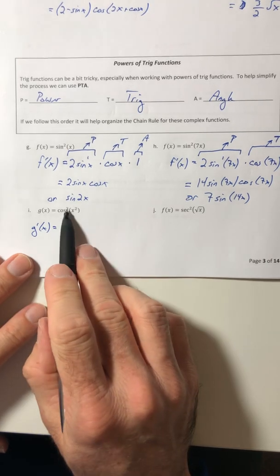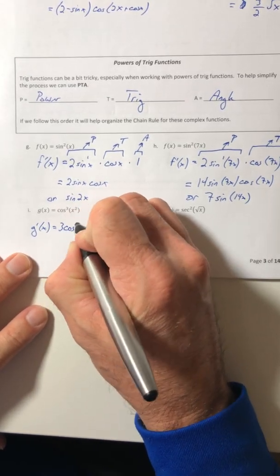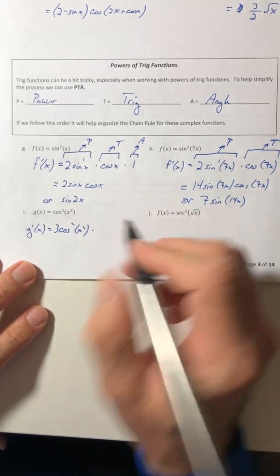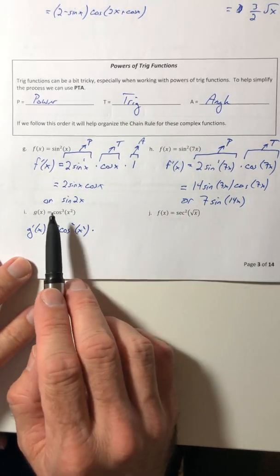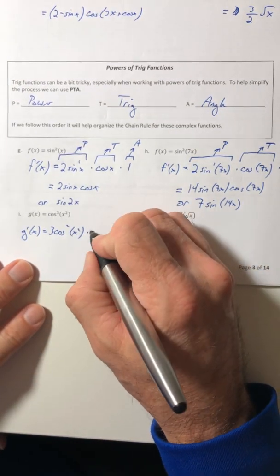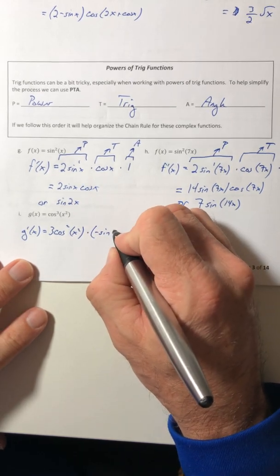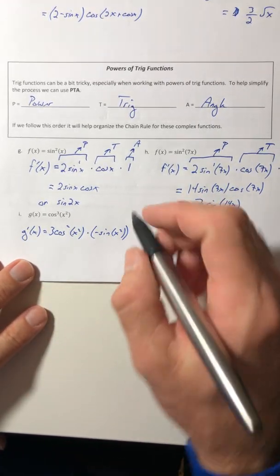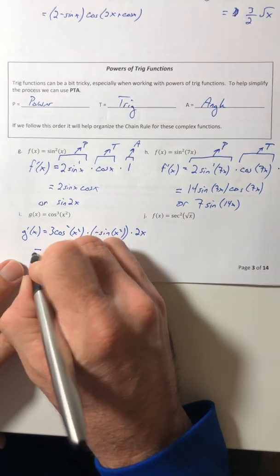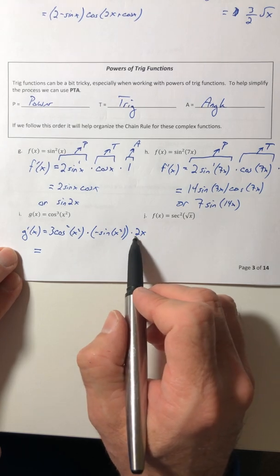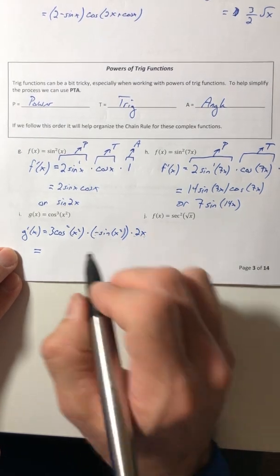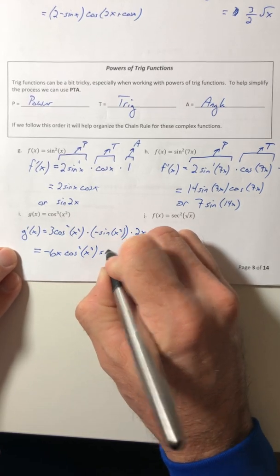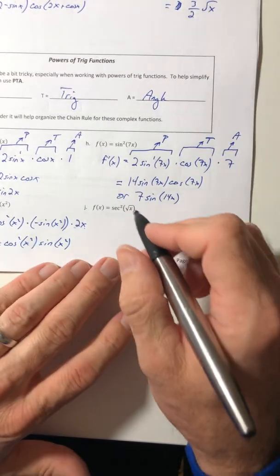The derivative of g: pull the 3 down using the power rule, decrease the power by 1, angle stays the same — that's the power part. Now the trig: the trig function is cosine, and the derivative of cosine is negative sine. Finally, the derivative of the angle x squared is 2x. Multiplying everything: 2x times 3 times negative gives negative 6x, cosine squared(x²) times sine(x²).